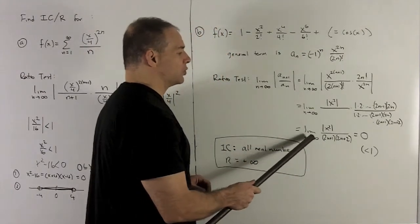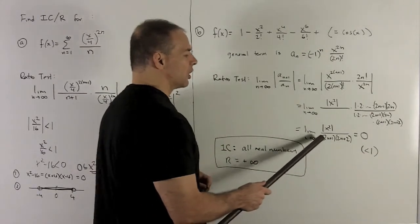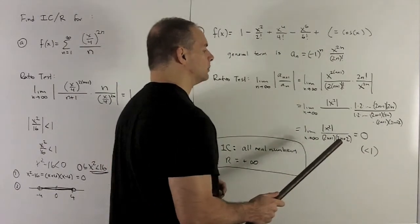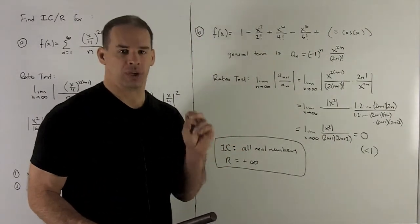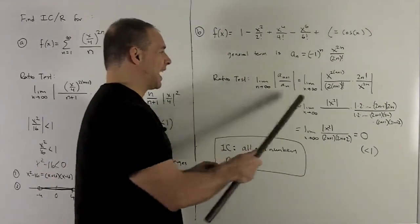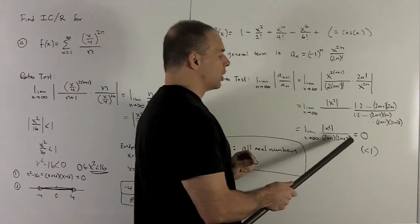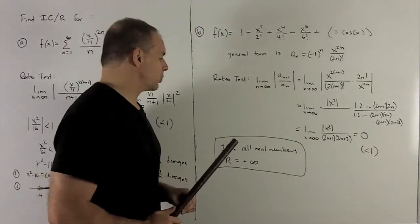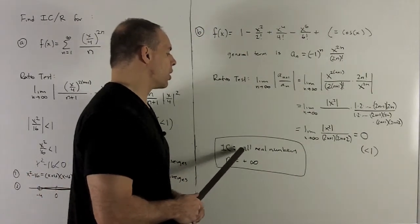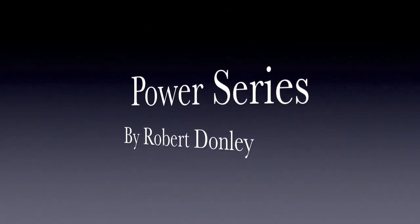If I take the limit as n goes to infinity, x squared is just going to be some number when you fix your x. So the bottom is going to drive everything down to 0. When is this less than 1? That's what the ratio test asks for. You'll get convergence when this gadget here is strictly less than 1. Well, x didn't matter, so this is going to be 0 always. So this is going to converge for all x. So we'll have interval of convergence, all real numbers. Radius of convergence is going to be plus infinity.